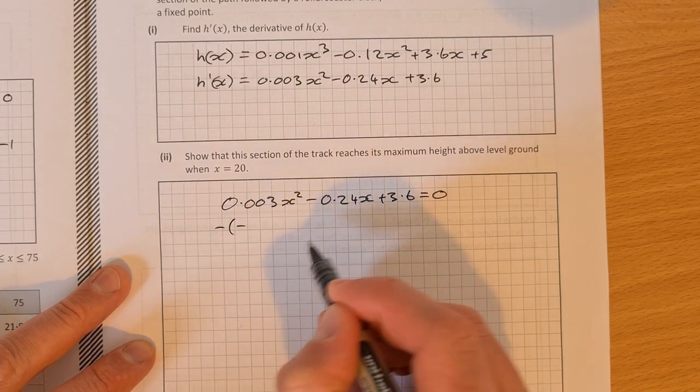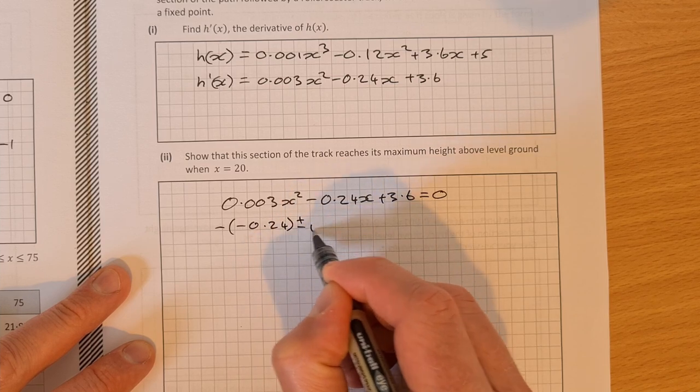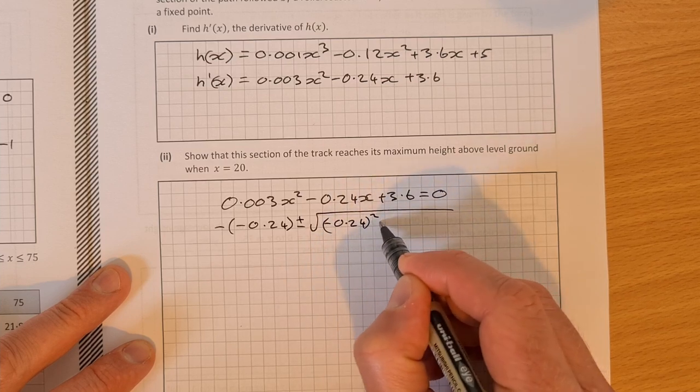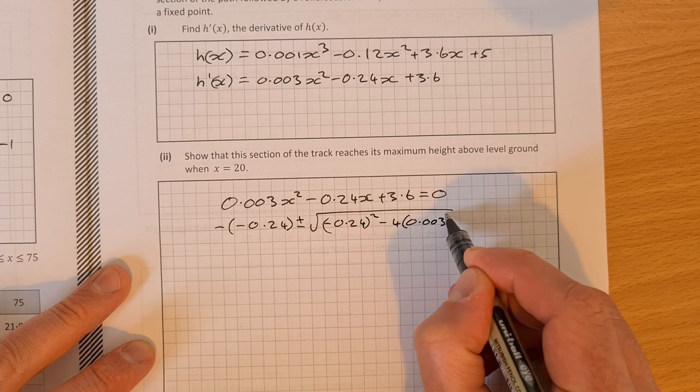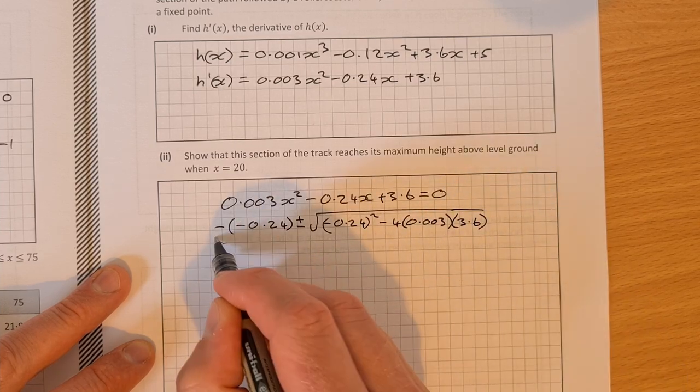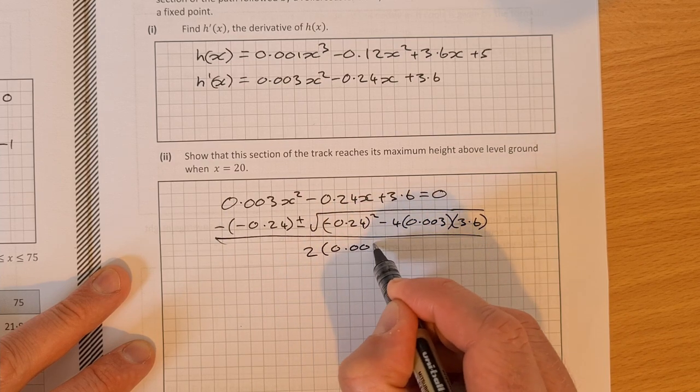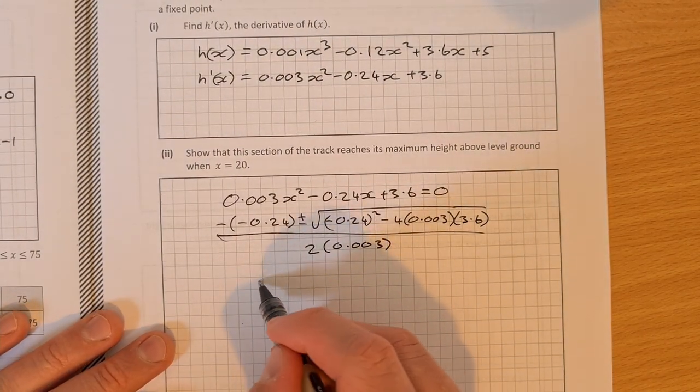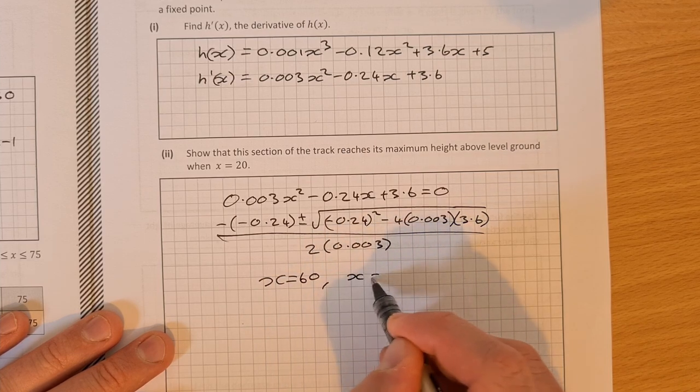So minus minus 0.24 plus and minus the square root of B squared. So minus 0.24 squared minus 4 times A, which is 0.003 times C, which is 3.6 all over 2A, so 2 times 0.003. And you get two answers there in your calculator. I'll let you do that yourself. You get x is equal to 60 and you get x is equal to 20.